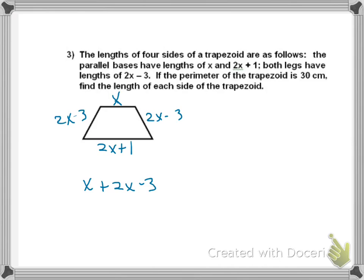So, I have X plus 2X minus 3 plus 2X plus 1 plus 2X minus 3 equals 30. I just started here and added all the sides up. So, now I collect my like terms. So, I have X, 2X, 2X, 2X. Everything's positive. So, that's 2, 4, 6, 7X.